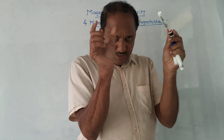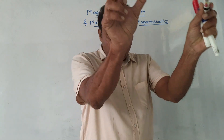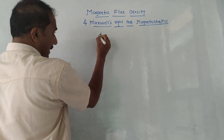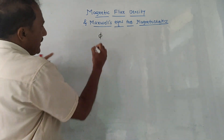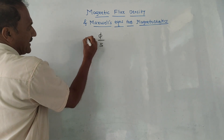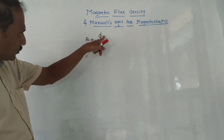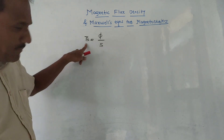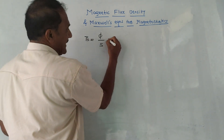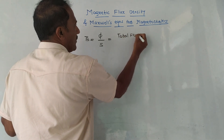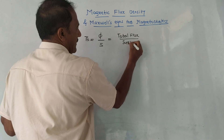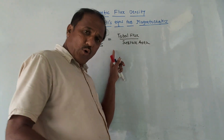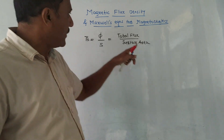To define current density, it is J-bar, where current density equals total current divided by surface area. On the same lines, magnetic flux density is denoted by B, and magnetic flux is denoted by the symbol Φ. If surface area is denoted by S, then magnetic flux density B equals Φ divided by S. Since B is a vector, we write it as B-bar equals Φ upon S.